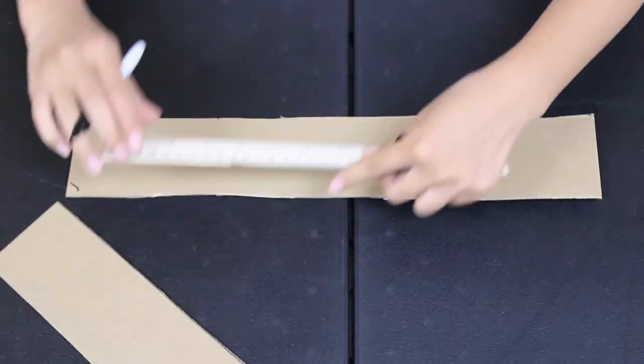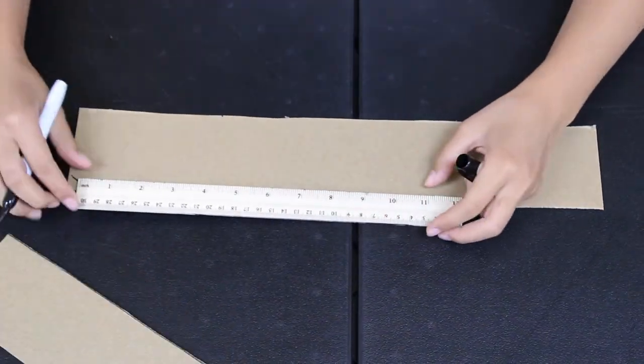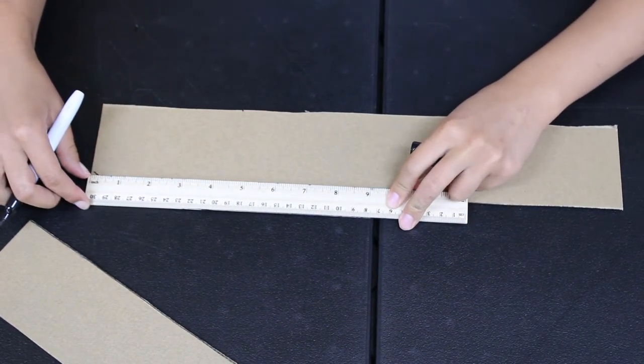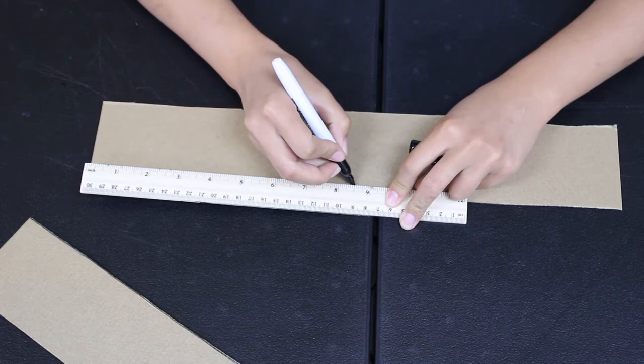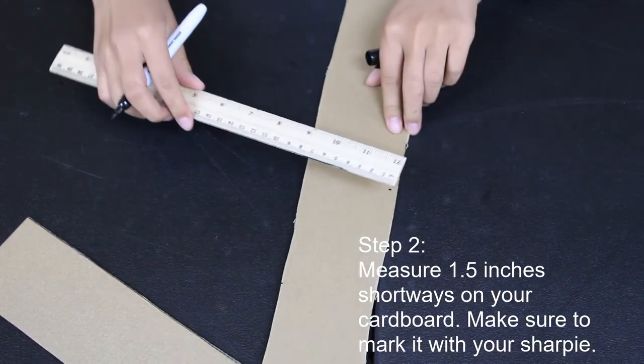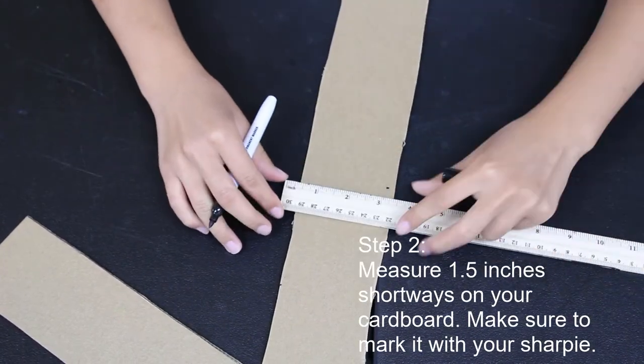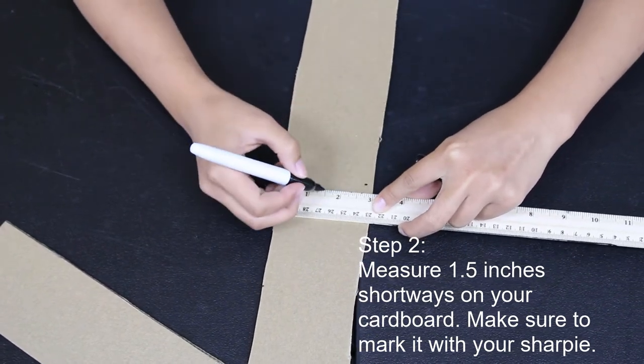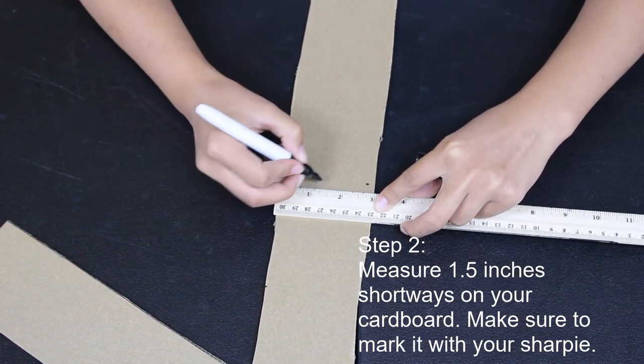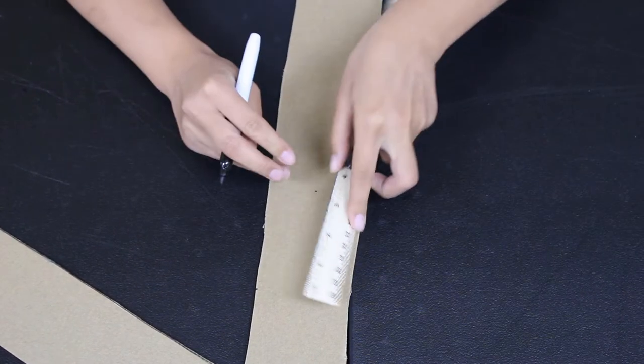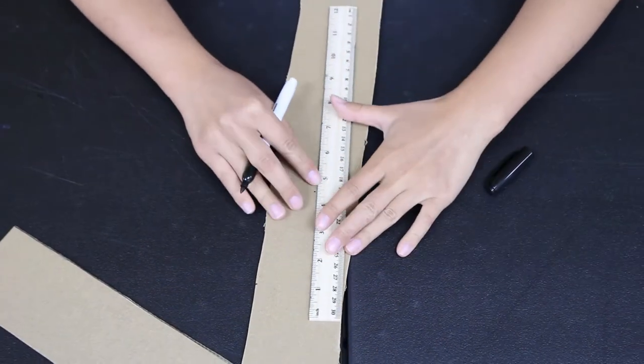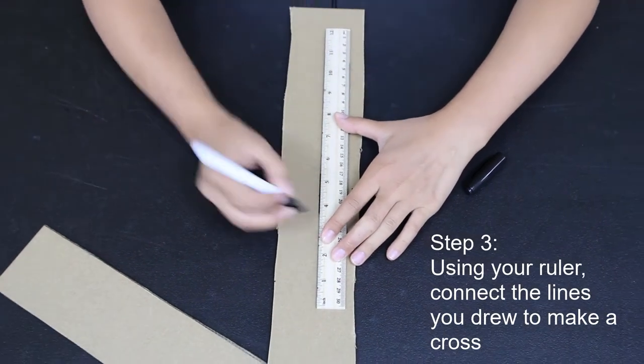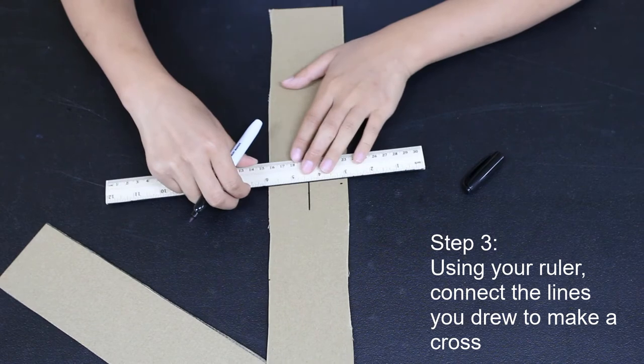That should be the middle lengthwise. Half of 3 inches is 1.5 inches, so where you made that mark of 8.5 inches lengthwise, find 1.5 inches widthwise. Using your ruler, connect the lines you drew to make a cross right in the middle.